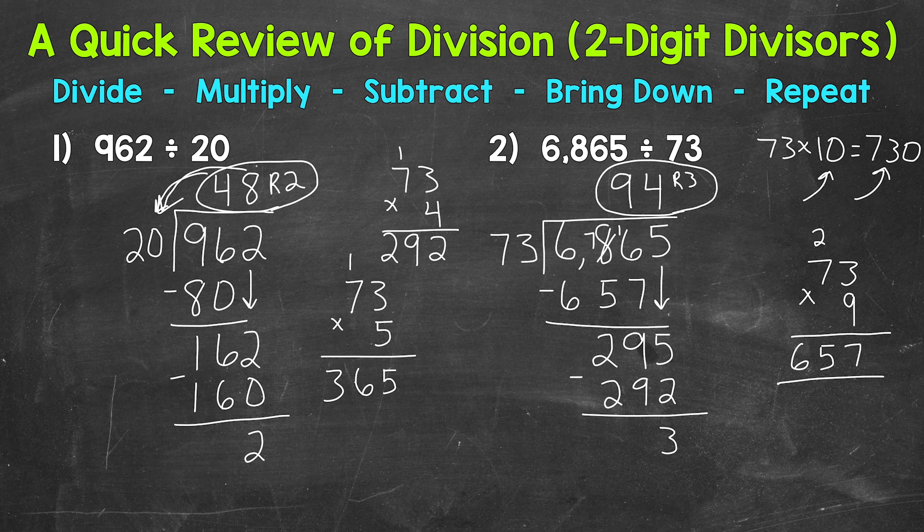Now one more thing I do want to mention is the difference between numbers 1 and 2. Although we divided by a two digit number in both of these problems, number 2 took more work and more time. But that's perfectly okay. In number 1, we divided by 20. That's a much easier number to work with than the 73 in number 2. So that's something to keep in mind as you go through these types of problems. Some numbers are easier to work with than others. And some problems take more work than others.